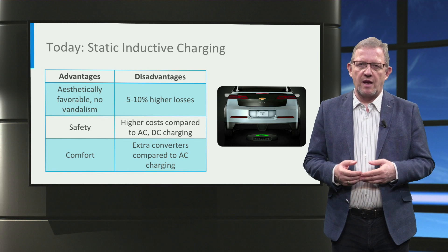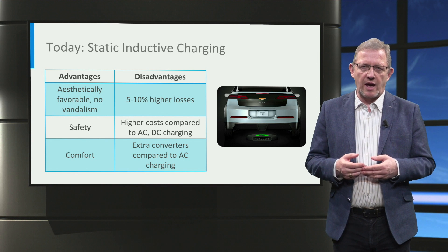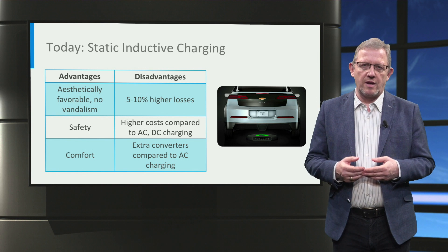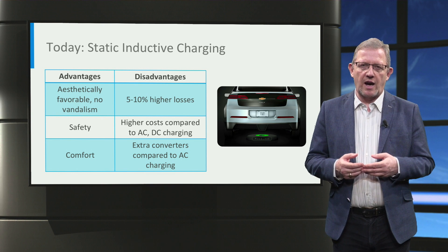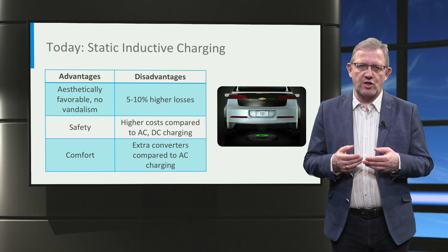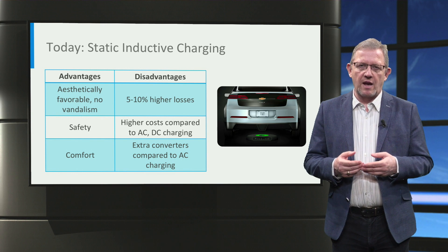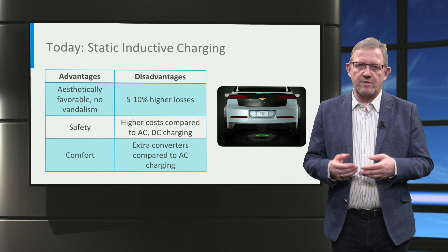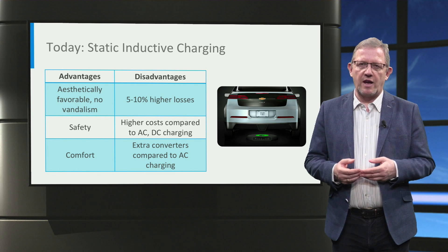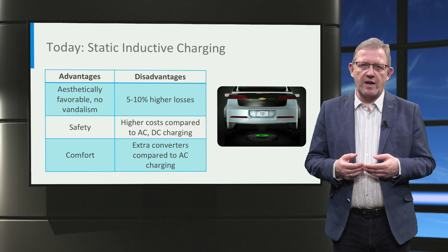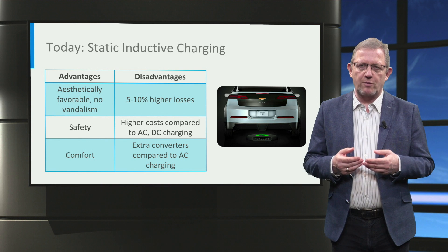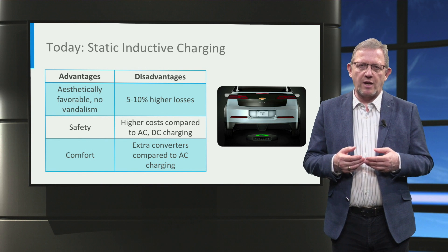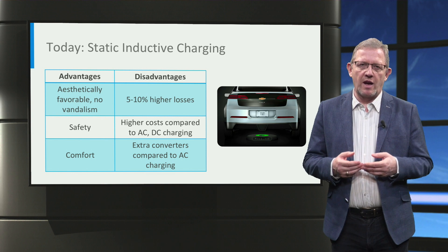Inductive power transfer systems have several advantages and disadvantages compared to conductive charging. The three advantages of such systems are: we don't need to add charge poles to the streets and hence they are aesthetically more compatible, especially for traditional cities. Also, the wireless charge pads in the ground can be flush-mounted and buried. Further, they are safe and convenient as the electric vehicle can be charged at the comfort of parking without plugging any cable into the system, and possibilities for tripping on the cable are avoided.